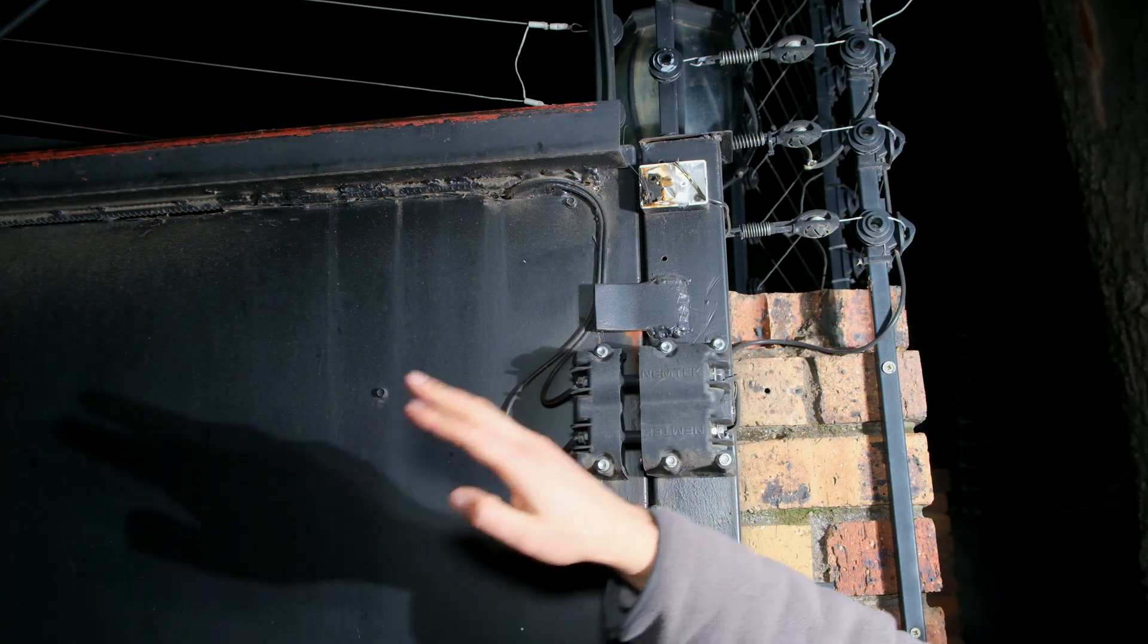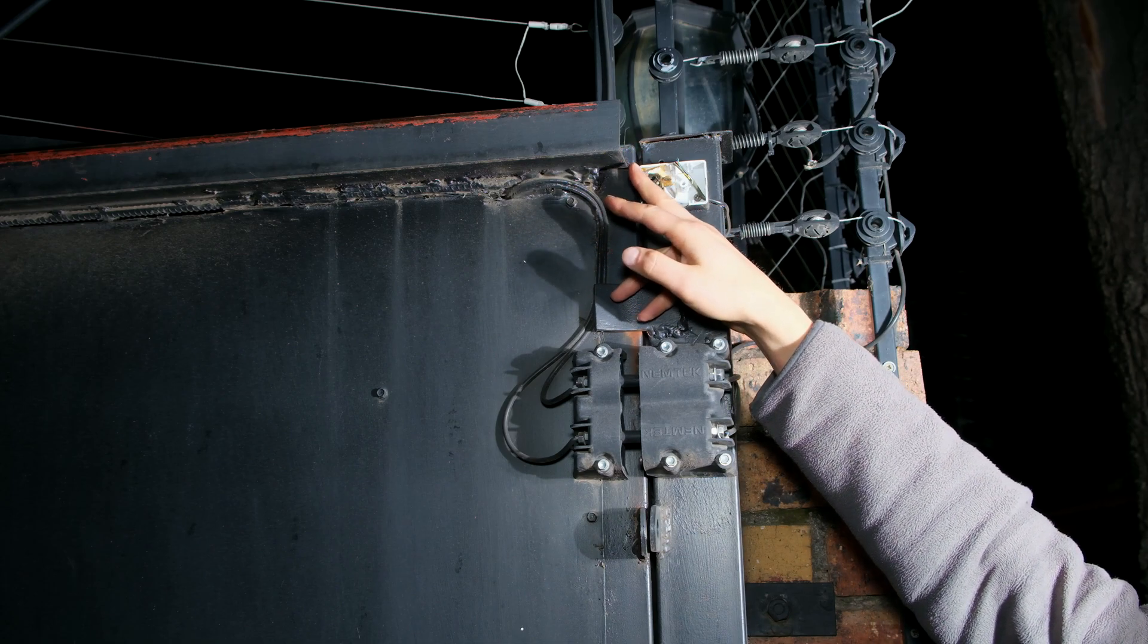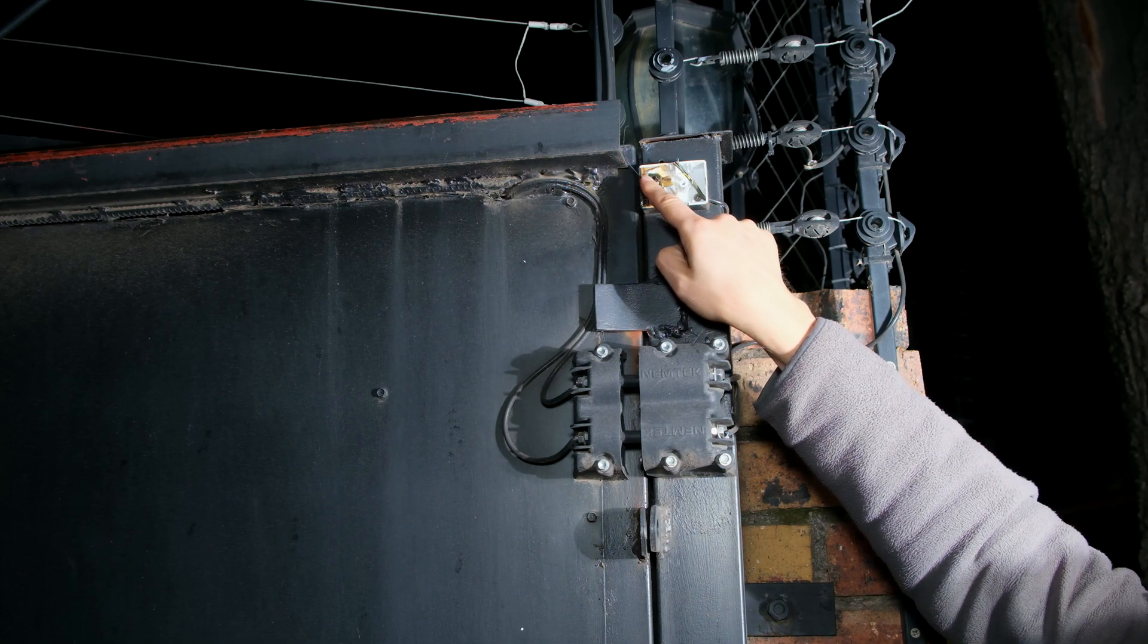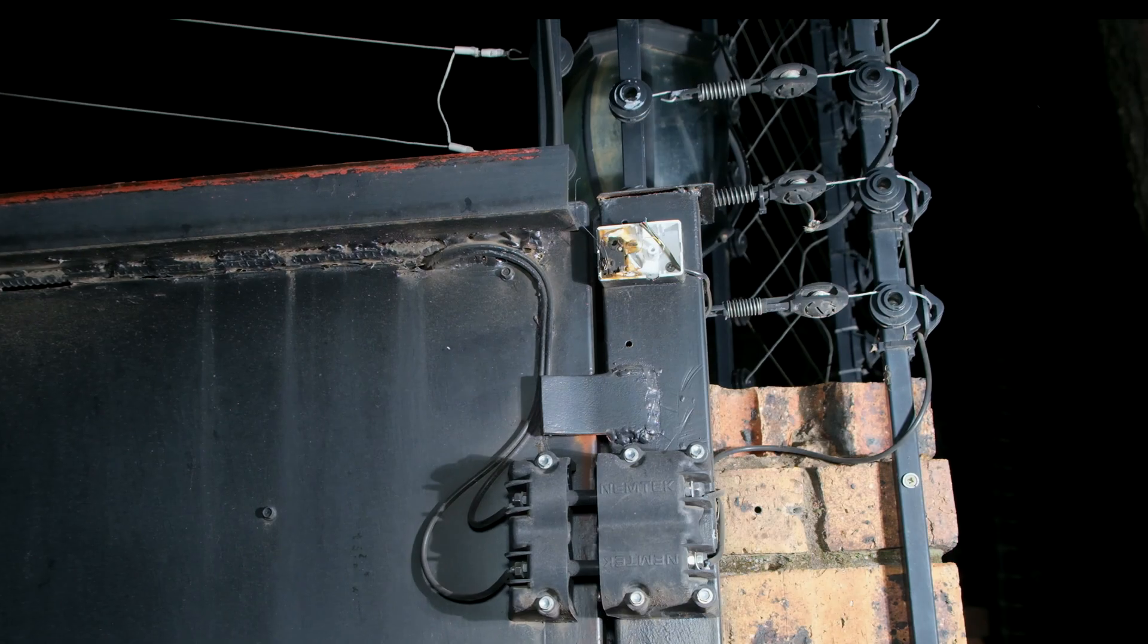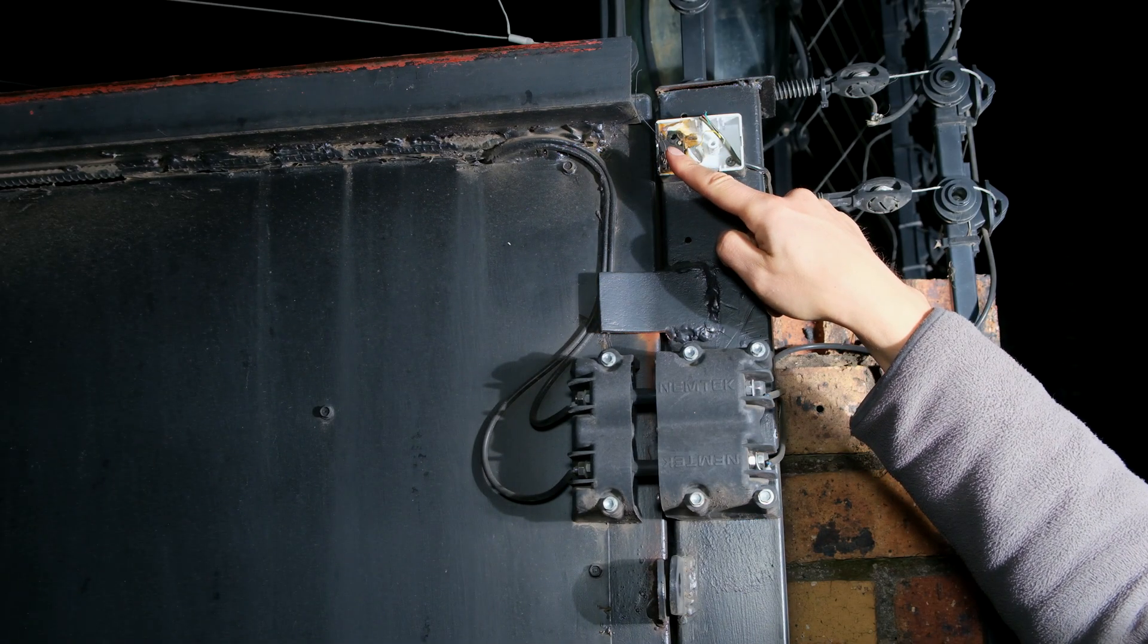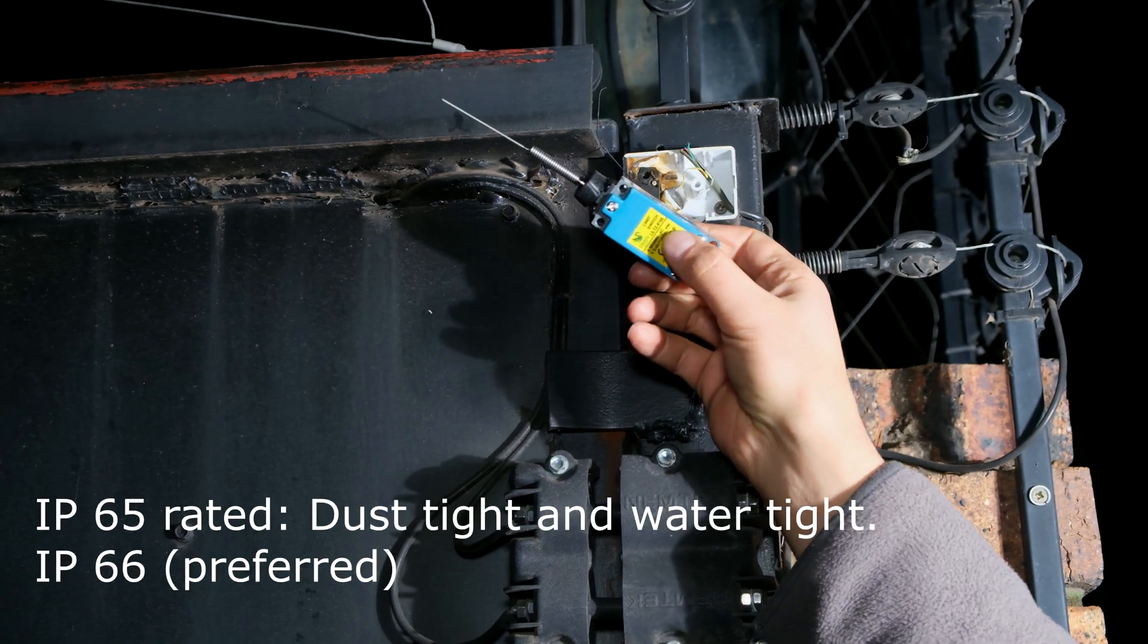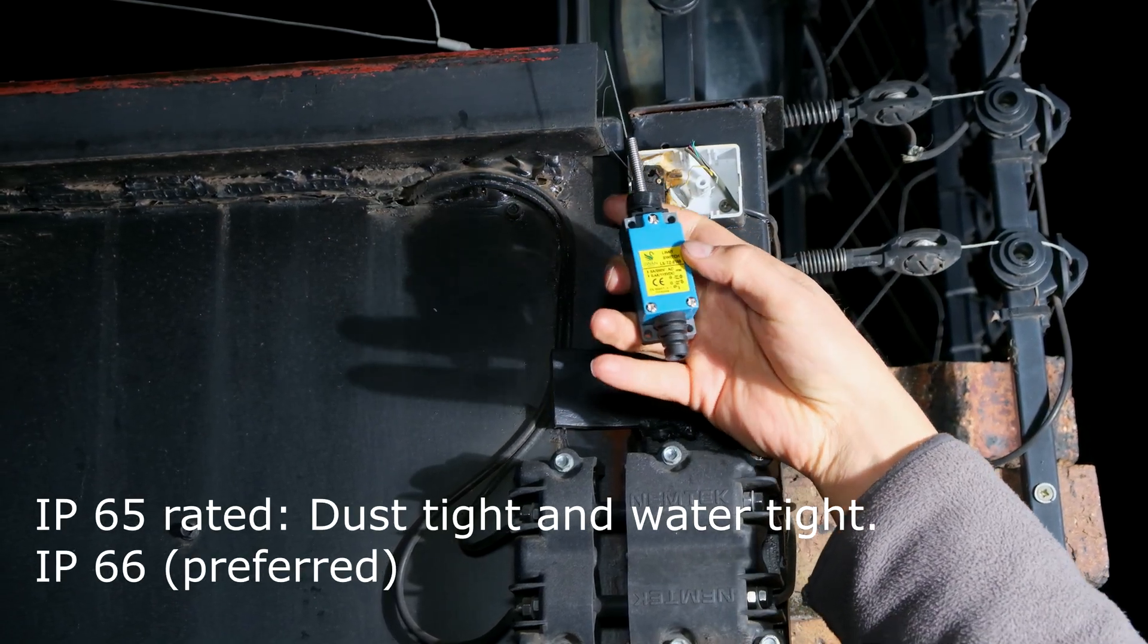Over here I have a gate, and I can determine if the gate is open or closed by using a limit switch. At the moment there is a limit switch here, and when the gate is opened that metal pushes the limit switch into the closed position. This can also be connected to your alarm system, but preferably you'd want an IP-rated industrial type limit switch.